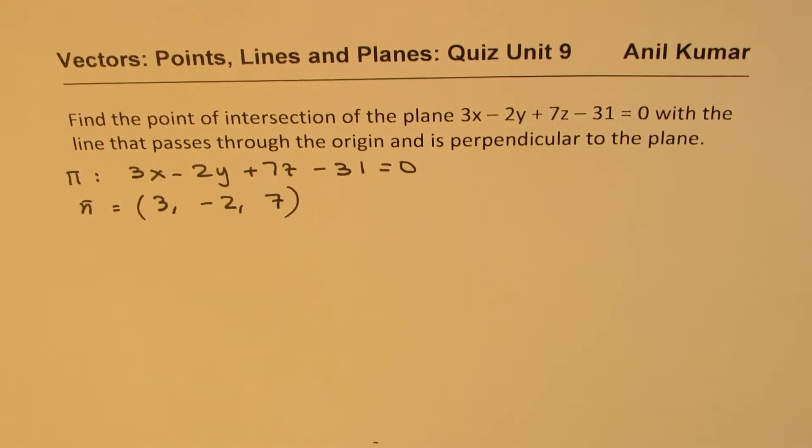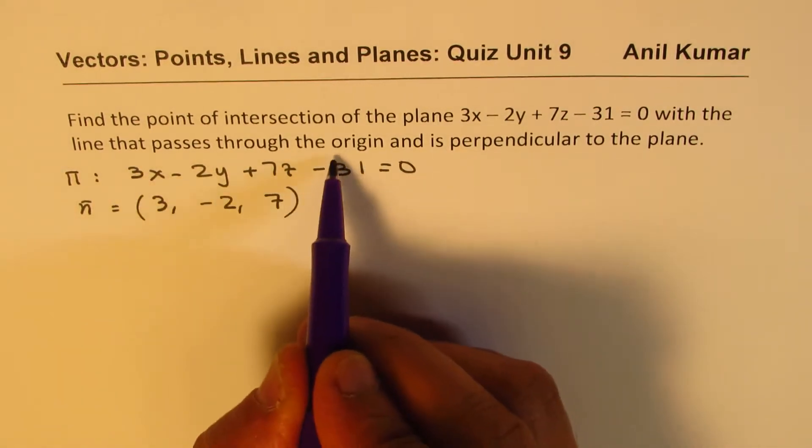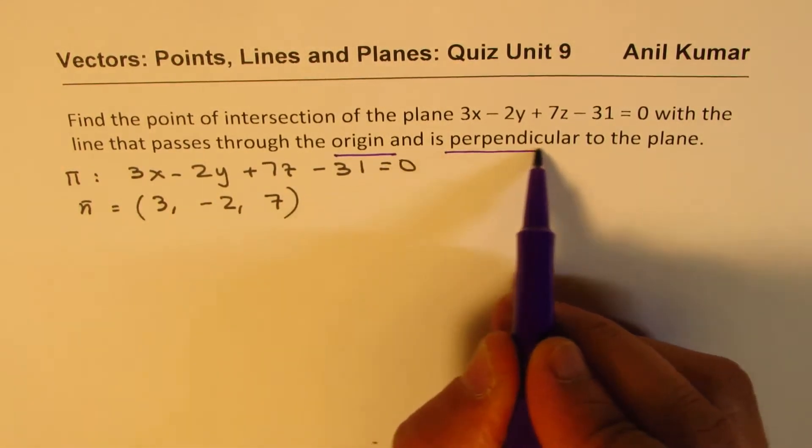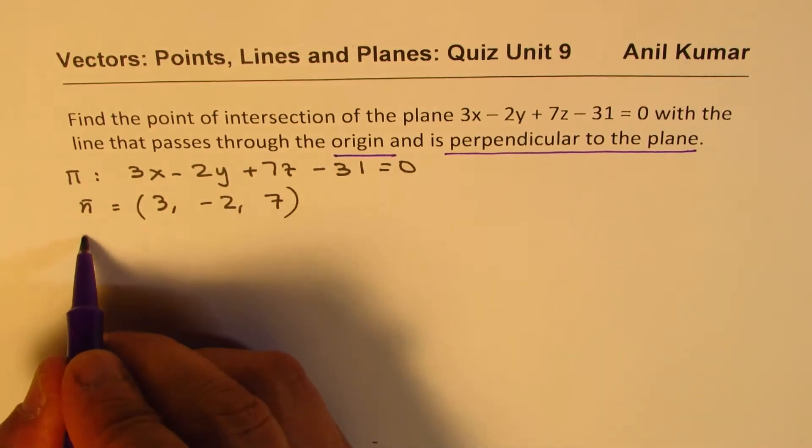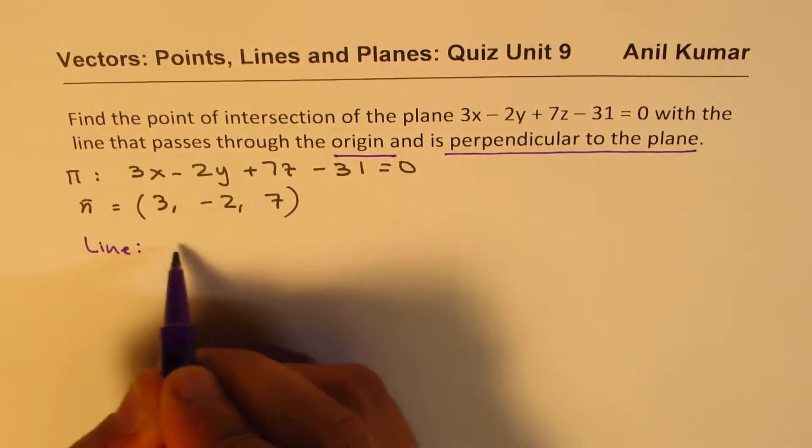Now we are looking for a line that passes through origin. So line passes through origin, (0, 0, 0), and is perpendicular to the plane. So as far as the line is concerned, we have, it goes through origin.